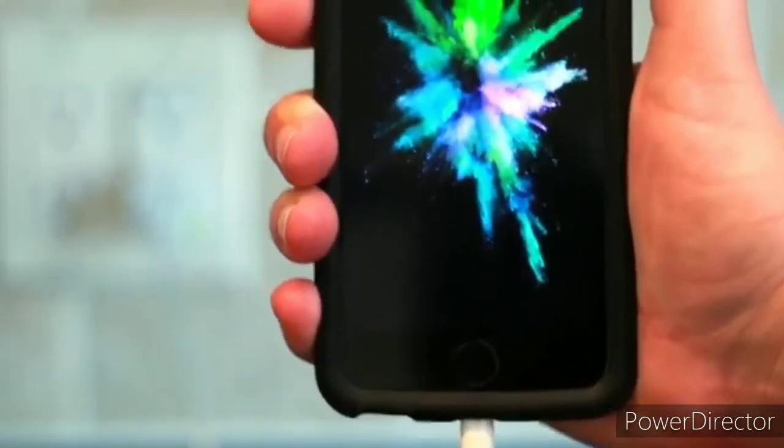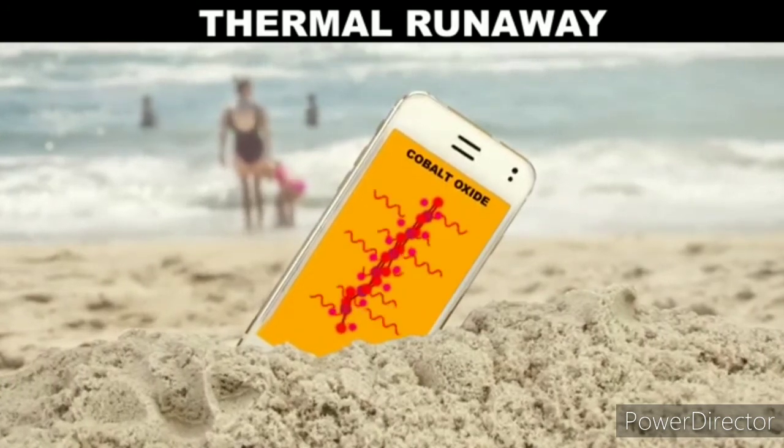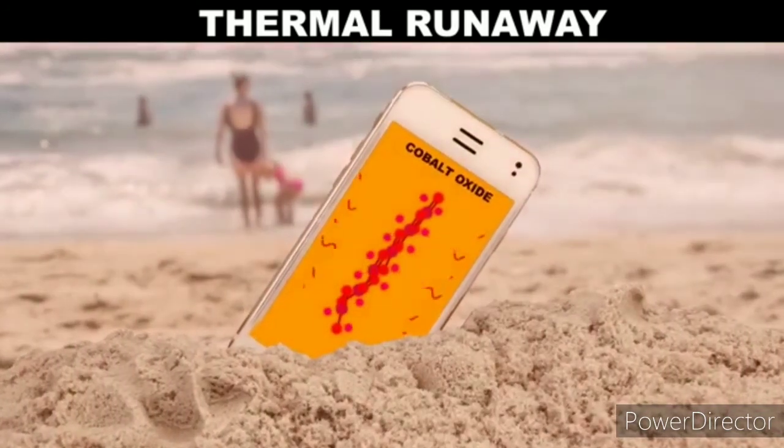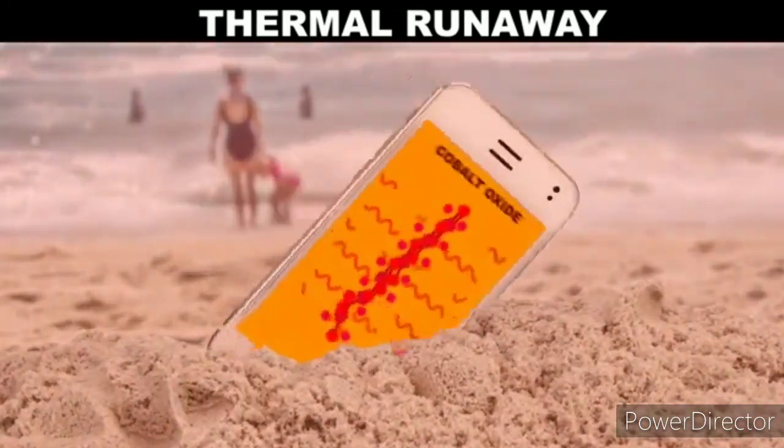Even worse, heat can start a thermal runaway. Once the cobalt oxide gets hot enough, it starts a cycle of reactions that throw out more and more heat. All of this heat starts to boil the liquid in your phone's battery, building pressure until the battery explodes.